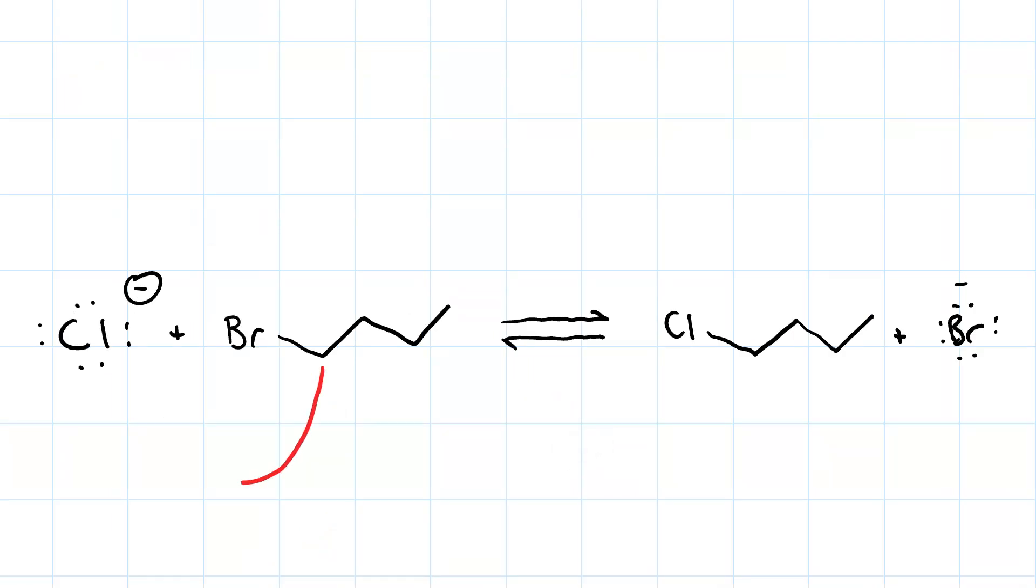Now you might think you could do something like this, to form that bond with the chloride. But look, that curved arrow is starting on an atom. You don't want to do that. Also it would exceed the octet on the chloride.